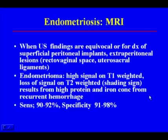MRI can be used to diagnose endometriosis when ultrasound findings are equivocal, or for diagnosis of superficial peritoneal implants, extraperitoneal lesions, lesions in the rectovaginal space, or uterosacral ligaments. On MRI, an endometrioma has high signal on T1-weighted and loses signal on T2-weighted imaging — referred to as the shading sign — due to high protein and iron concentration from recurrent hemorrhage. The sensitivity of MRI for endometriosis is 90 to 92%, with specificity of 91 to 98%.